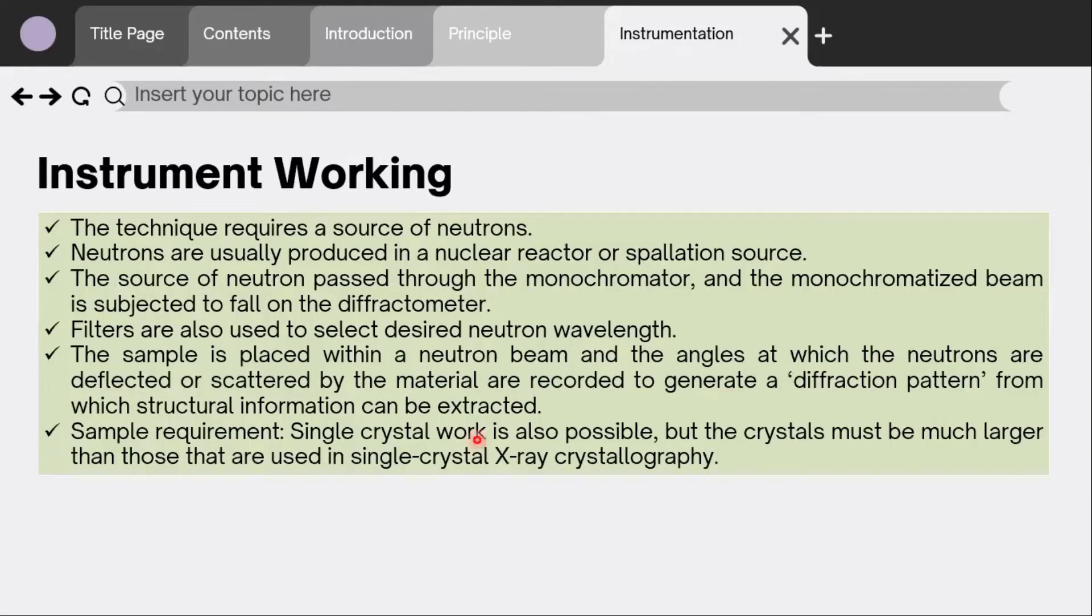How does the instrument work? The technique requires a source of neutrons. Neutrons are usually produced in a nuclear reactor or spallation source. The source of neutrons passes through the monochromator and the monochromated beam is subjected to fall on the diffractometer.